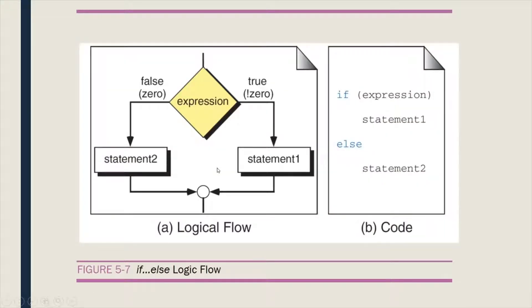This figure shows the logic flow of the if-else statement. We have the expression — if the expression is evaluated to true, which is non-zero, then statement one will be executed. If the expression is evaluated to false, meaning the value of the expression is zero, then statement two will be executed.